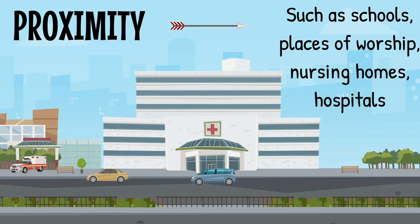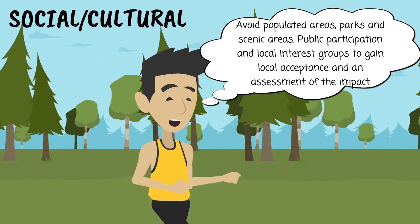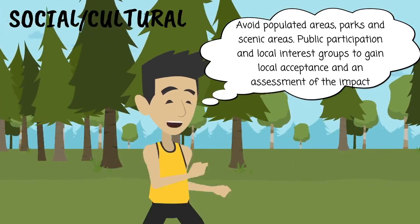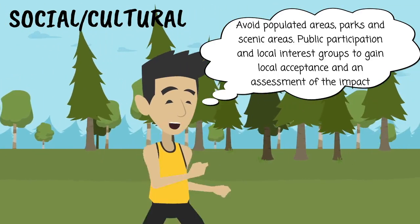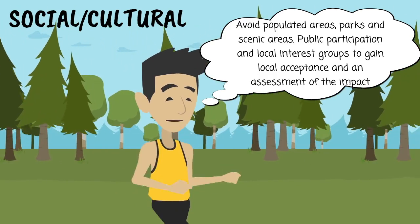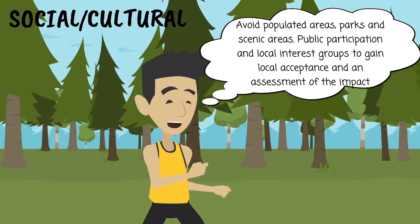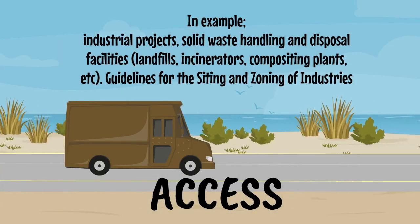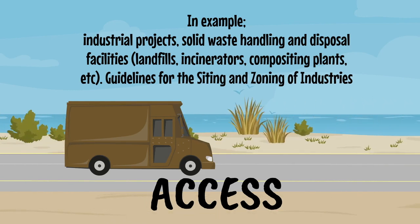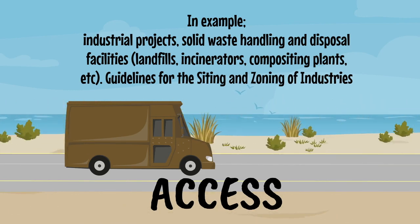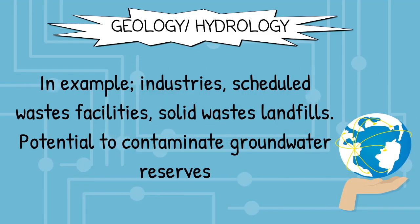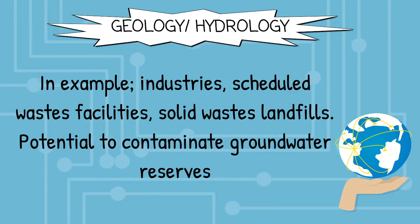Proximity: the facility should be distant from sensitive potential receptors of impacts such as schools, places of worship, nursing homes, and hospitals. For social or cultural considerations, it is needed to avoid populated areas, parks, and scenic areas. Public participation and local interest group consultation is required to gain local acceptance, and an assessment of the impact on cultural resources would be necessary. Access: use of secondary roadways or streets is undesirable because of noise impacts and traffic congestion on routes not designed for heavy truck use. Geology or hydrology: siting of facilities, for example industries, scheduled waste facilities, and solid waste landfills, should have due regard for their potential to contaminate groundwater reserves.